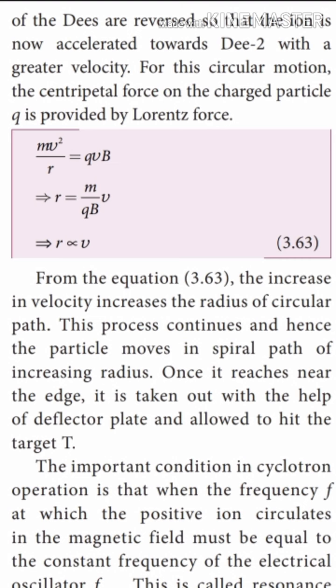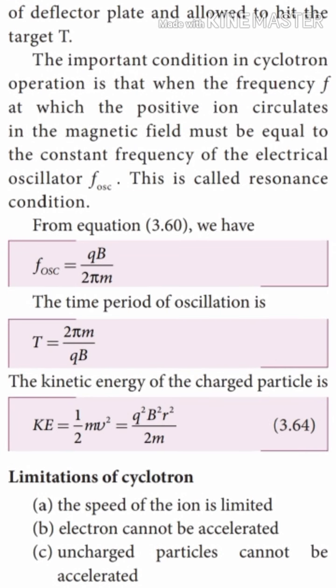The important condition in cyclotron operation is that the frequency at which the positive ion circulates in the magnetic field must be equal to the constant frequency of the electric field oscillator, that is F_osc. F_osc is the frequency of the oscillator. This is called the resonance condition. F_osc is equal to Qb divided by 2π.